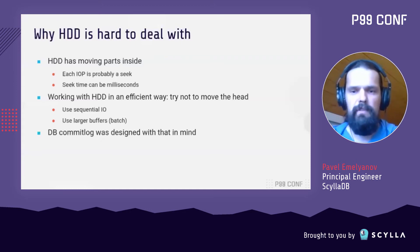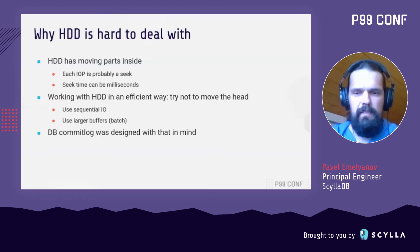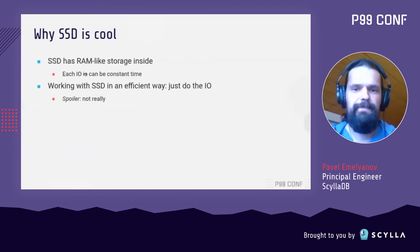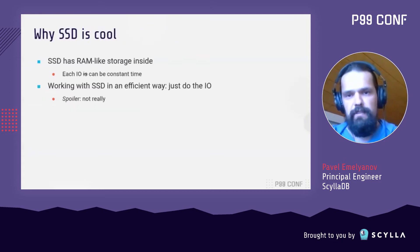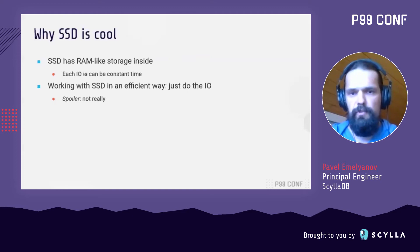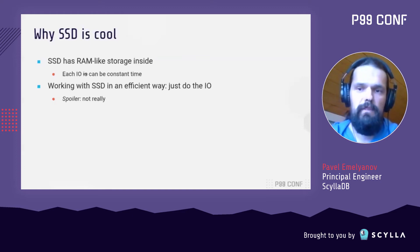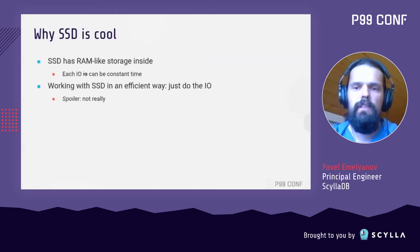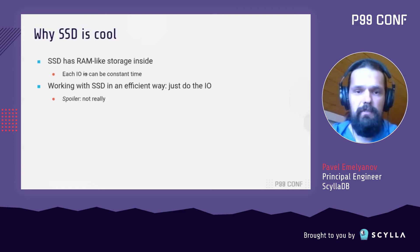A good example of applying this rule comes from the database world. Almost every database out there has a commit log, and the commit log was invented and designed keeping that principle in mind. Next appeared the SSDs, and they were met very warmly because under the hood they looked pretty much like regular RAM, with all data cells being accessed at theoretically the same time. One of their expected benefits was that IO could finally be done without much thinking about buffer size and without any care of seek time.